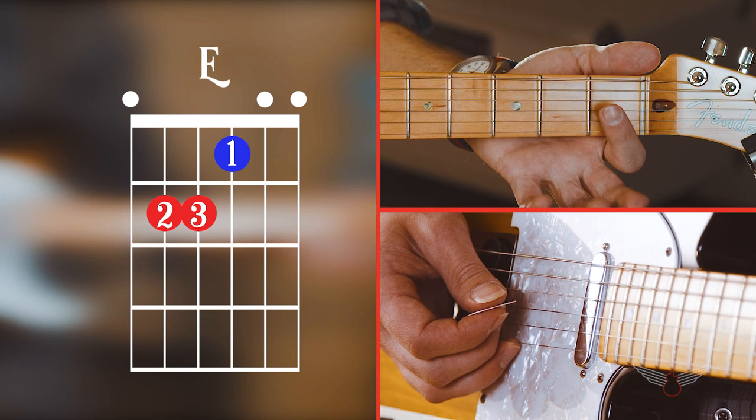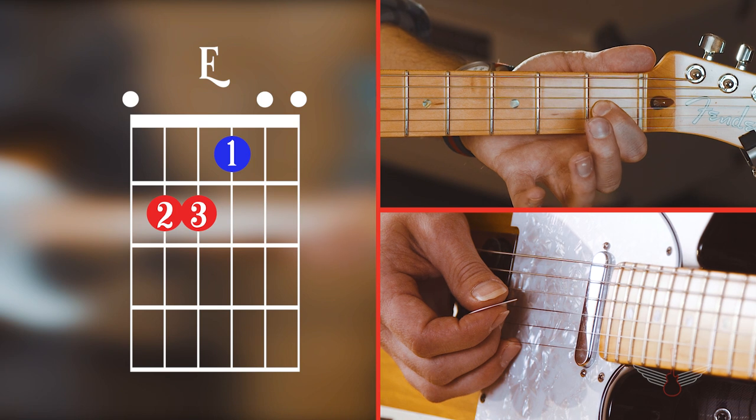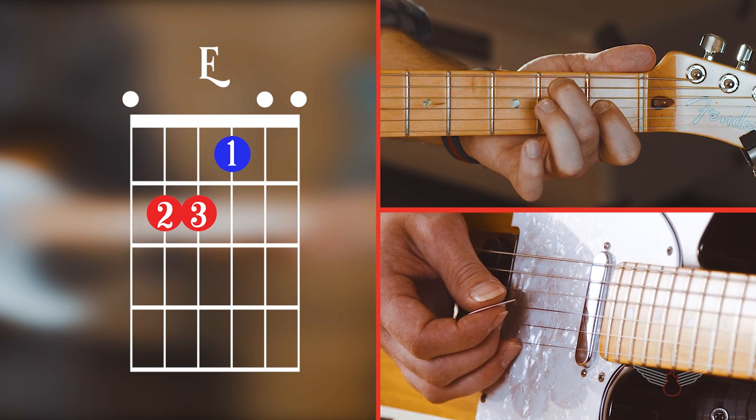First, place your pointer finger on the first fret, third string. Your middle finger on the fifth string, second fret. Ring finger on the second fret, fourth string.